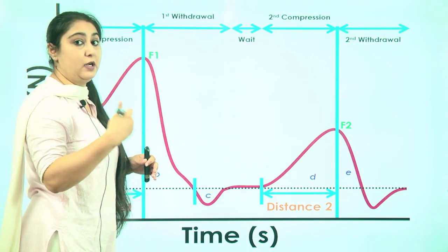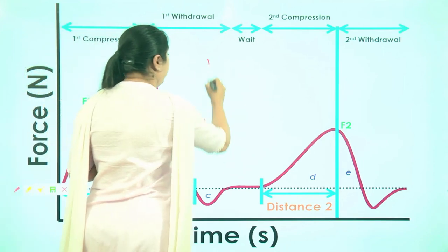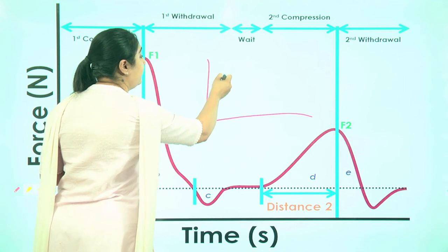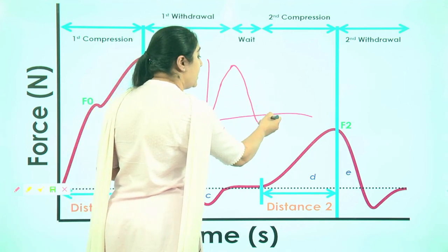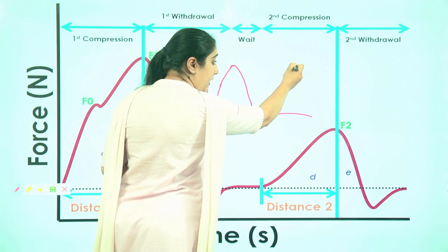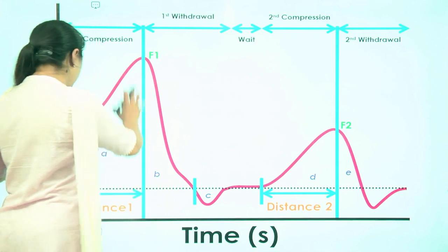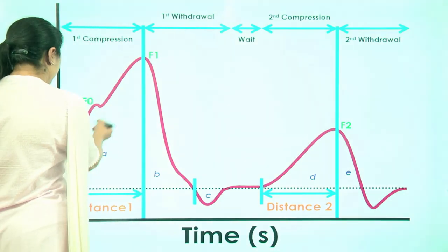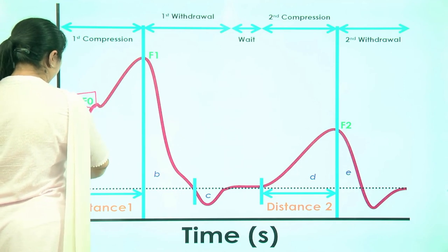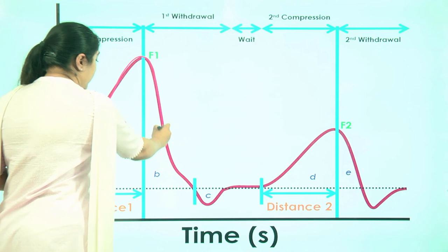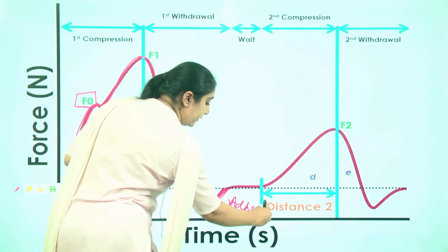We obtain a graph between force and time. Compressing the food material gives a peak, and once we remove the compression the graph goes down. Then for the second compression, another peak is produced. These two peaks are obtained. In the first compression we have a point F0, and as the graph goes to the negative side, this negative area gives us the adhesiveness. The first compression is followed by first withdrawal, a waiting time, then second compression and second withdrawal.